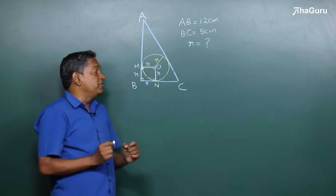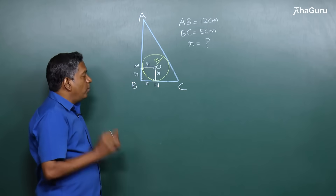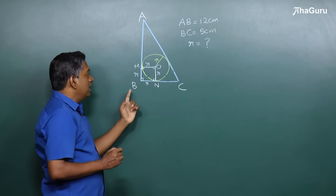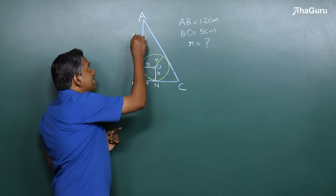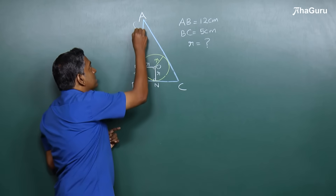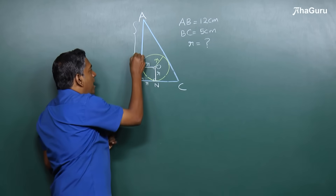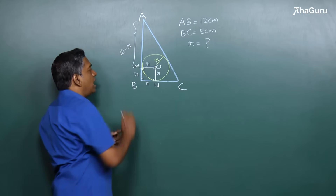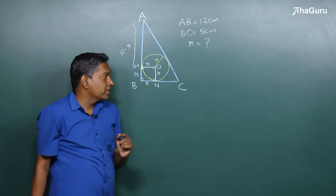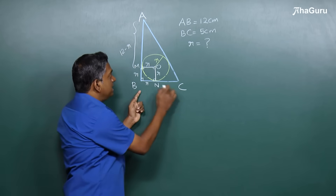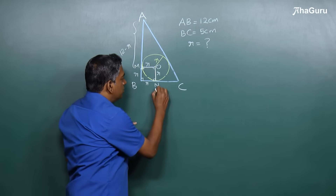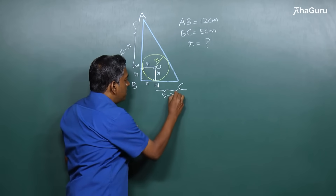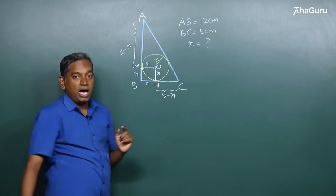This means all four sides equal R. Now, what do we do with this information? We are told that AB is 12, which means this distance AM must be 12 minus R. Similarly, BC is 5, so this distance is 5 minus R.